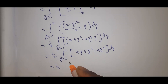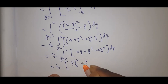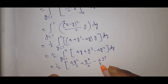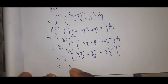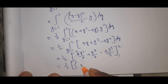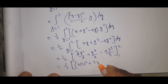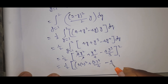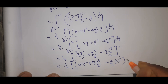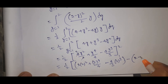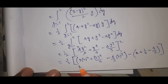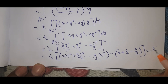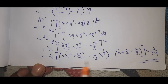That equals 1 by 2 times 4y squared by 2 plus y to the power 4 by 4 minus 4y cubed by 3, evaluated from 1 to 2. Substituting the upper limit 2 and lower limit 1, and taking the LCM, we end up with the answer 5 by 24.